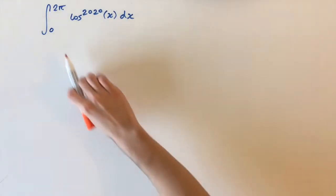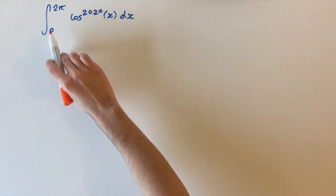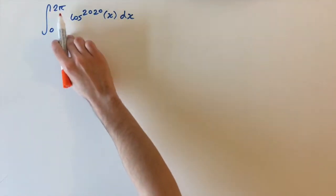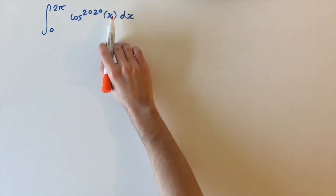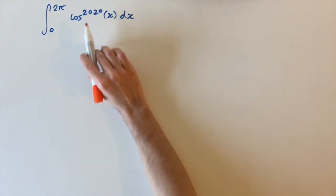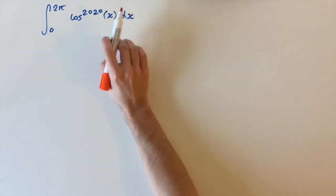We're looking at the integral between the limits of zero and two pi of cosine of x to the power of 2020 dx.